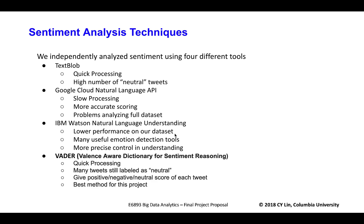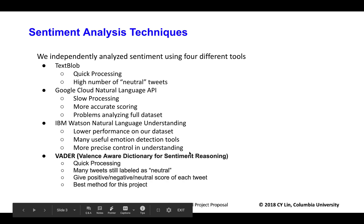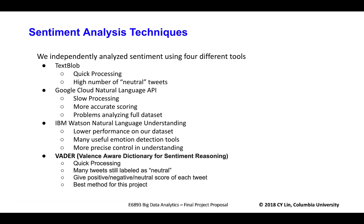We compared four different tools of sentiment analysis: TextBlob, Google Cloud Natural Language API, IBM Watson Natural Language Understanding, and VADER. We determined VADER is the best one because it can quickly process our data, and also it gave us more informative information about the sentiment score of tweets.